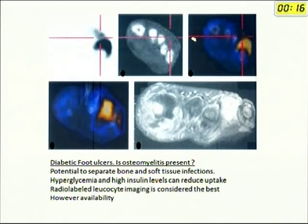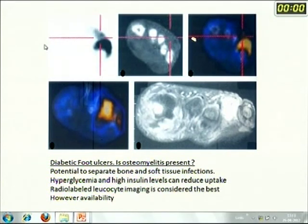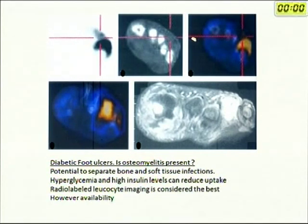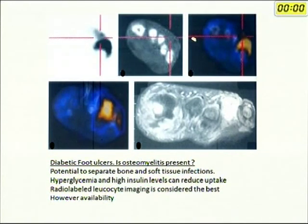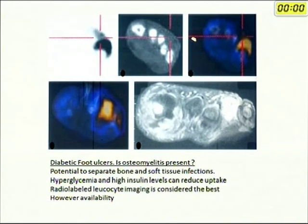Another common situation is the diabetic foot ulcer — is osteomyelitis present? PET has definite potential to differentiate bone from soft tissue infection due to its multiplanar capability, allowing precise localization of infection in, for example, a metacarpal. However, the high blood glucose in diabetic patients competes with FDG for cellular uptake, which interferes with PET imaging. Despite these problems, PET is a very useful technique for making a diagnosis of osteomyelitis in a diabetic foot.